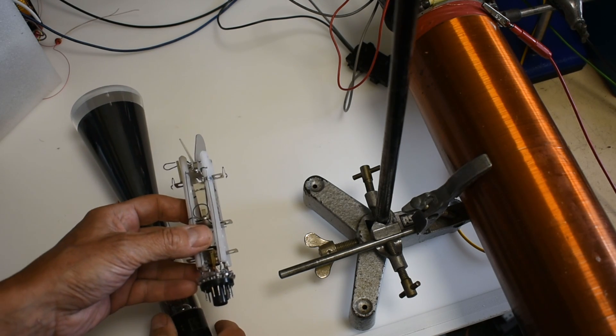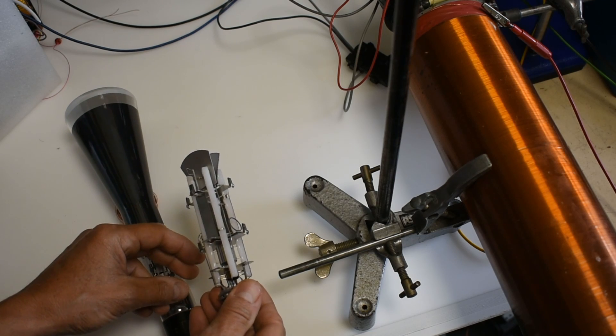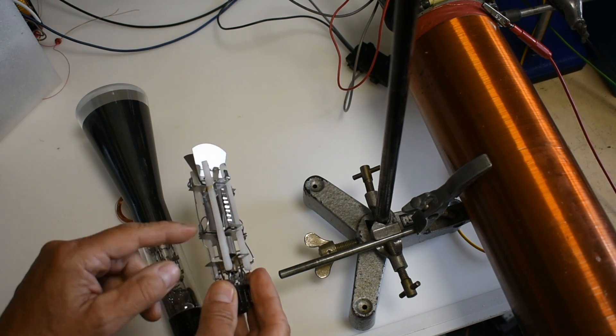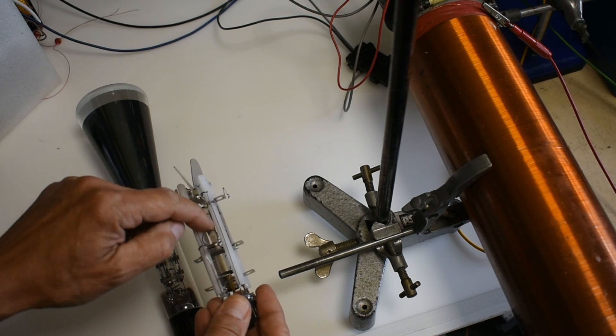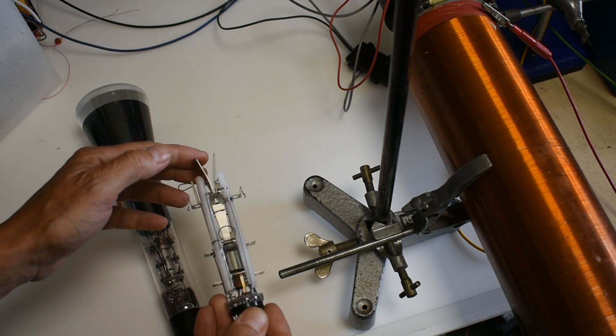If we look at the electron gun here, you can see there are anodes here, a focusing anode, and our Y plates at the end and X plates in the middle at 90 degrees to one another.